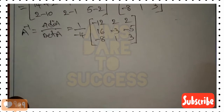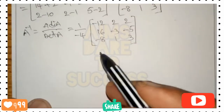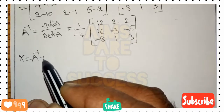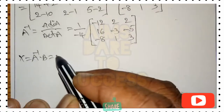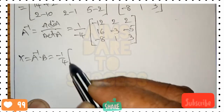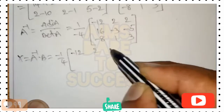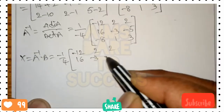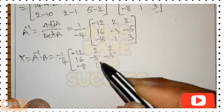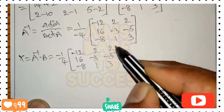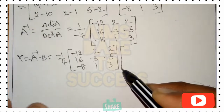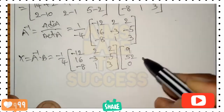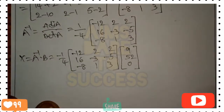Now we apply the matrix inversion method formula: X = A inverse times B. So X = (-1/4) times [-12  2  2 / 16 -3 -5 / -8  1  3] times B, where B is the constant matrix [9 / 52 / 0], from the right-hand side values of the given equations.